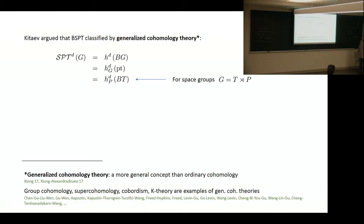In a series of talks, Kitaev argued that even though we may not know the classification of SPT phases for every given symmetry in every given dimension, we can argue that the classification is nevertheless described by something called a generalized cohomology theory. For those who have never heard of the term generalized cohomology theory, it's basically a concept that's more general than ordinary cohomology theory.